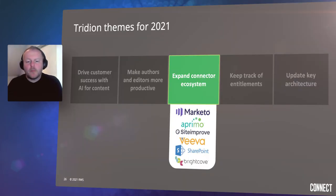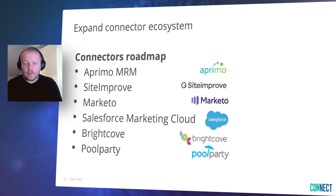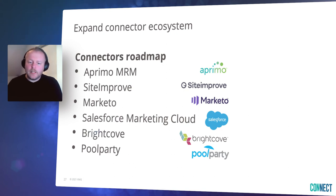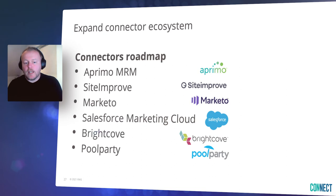The third theme is about our continuously expanding connector ecosystem. Additional connectors and functionality using the Tridion Integration Framework are being added: marketing resource management with our Primo MRM connector, digital quality management with Site Improve to measure and improve search engine optimization, accessibility, and content performance, marketing automation with Marketo and Salesforce Marketing Cloud, an online video platform with a Brightcove connector, and taxonomy for third-party taxonomy management, smart tagging, faceted search, and search suggestions.